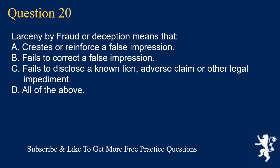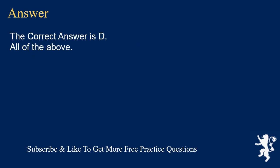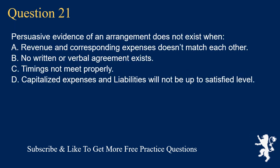Question 20: Larceny by fraud or deception means that: A. Creates or reinforces a false impression. B. Fails to correct a false impression. C. Fails to disclose a known lien, adverse claim, or other legal impediment. D. All of the above. The correct answer is D. All of the above.